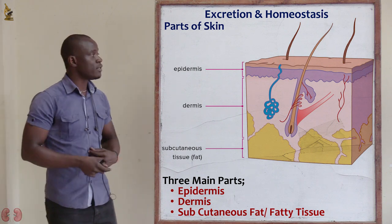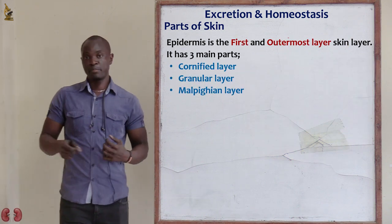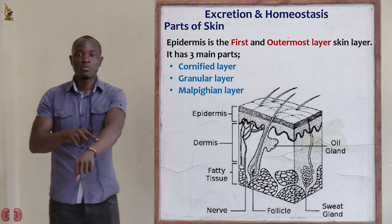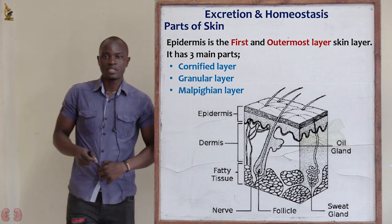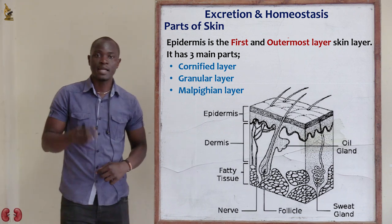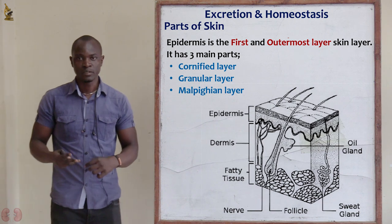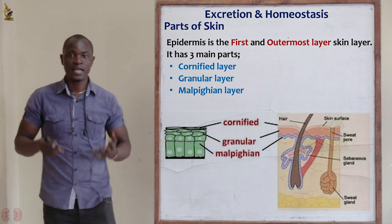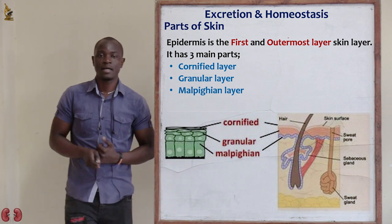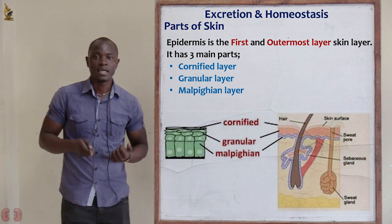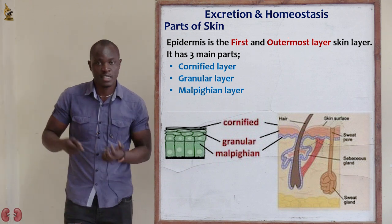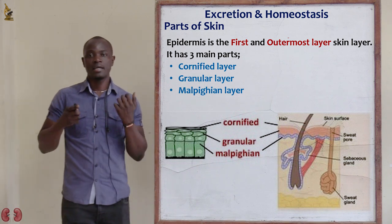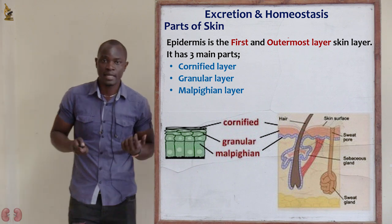Let's begin with the first one — the epidermis. The epidermis is the first and outermost layer of the skin. It is made up of three main layers: the cornified layer, the granular layer, and finally the malpighian layer.